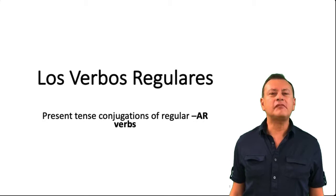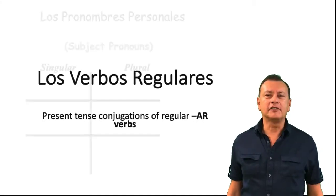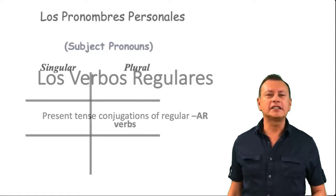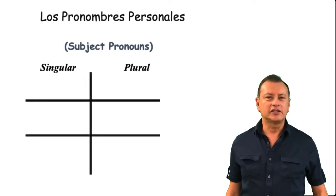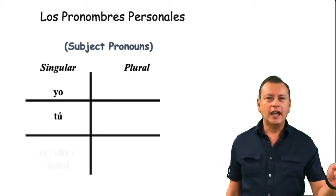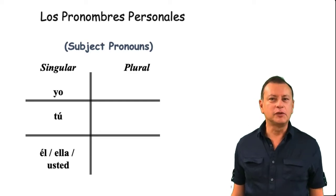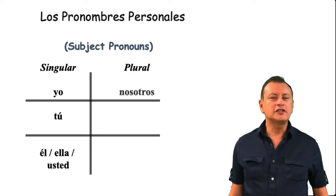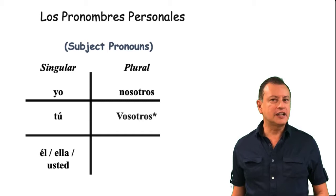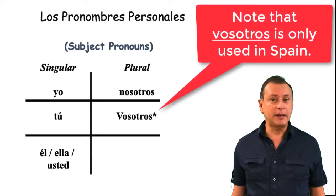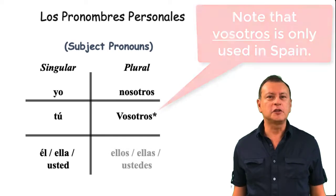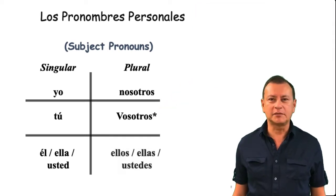Let's review the pronouns. The singular pronouns in Spanish are: yo, tú, él, ella, usted. For the plural ones: nosotros, vosotros. Notice that vosotros is only used in Spain, in the Iberian Peninsula. In Latin America, we prefer to use ustedes as the plural, as well as ellos and ellas.